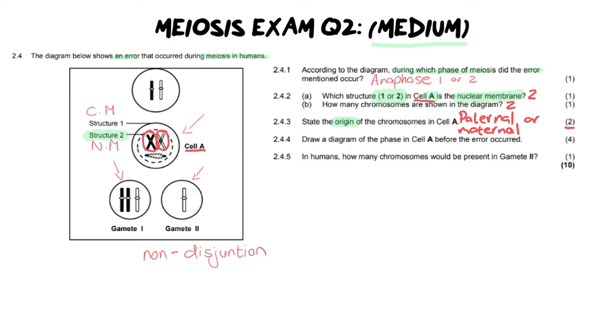Moving on to our next question: draw a diagram of the phase in cell A before the error occurred. Now this is why I'm saying if you don't know where the error occurred, you're going to get all these other questions wrong. The error occurred, as we mentioned at the beginning of the question, in anaphase 1 or 2. Now they're asking you to draw the phase before that error. So what are you going to have to draw? You are going to have to draw metaphase.